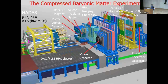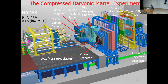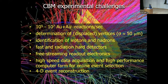The Compressed Baryonic Matter experiment is the only experiment being built at FAIR for this physics. It is a fixed target experiment, unlike ALICE which is a collider. The main idea is to detect dilepton signals — both dielectrons and dimuons — to study invariant mass, chiral symmetry restoration, and changes in meson masses. The detector includes a Ring Imaging Cherenkov Counter, a magnet, and a silicon detector. It operates in two modes: dielectron mode and dimuon mode. Requirements include a 10 MHz collision rate, vertex determination with 50 micron accuracy, and identification of both leptons and hadrons.